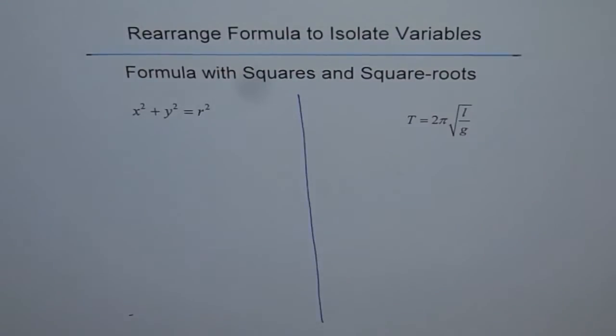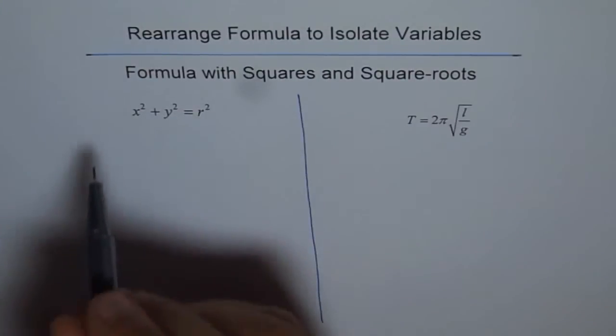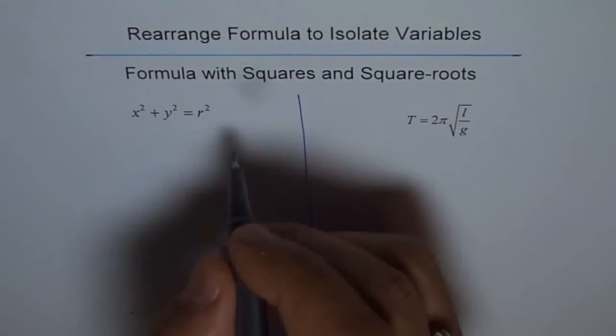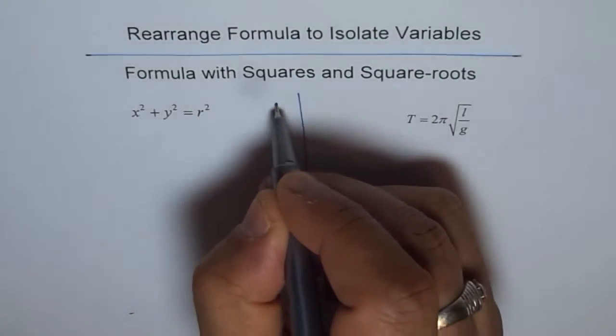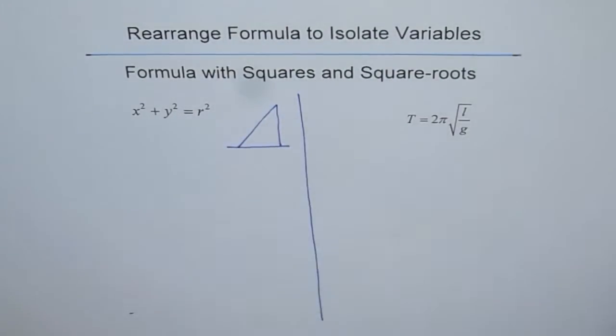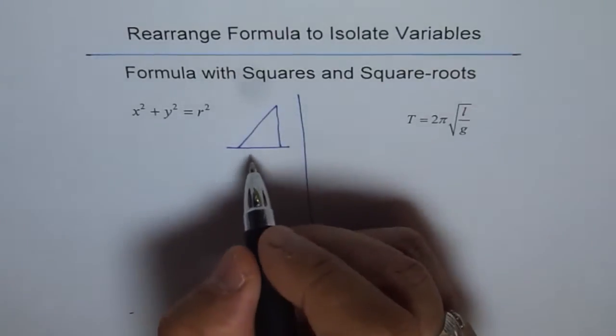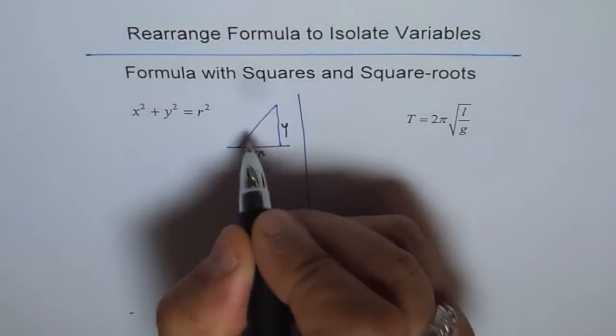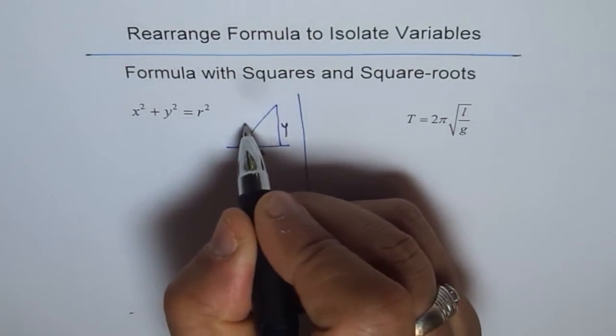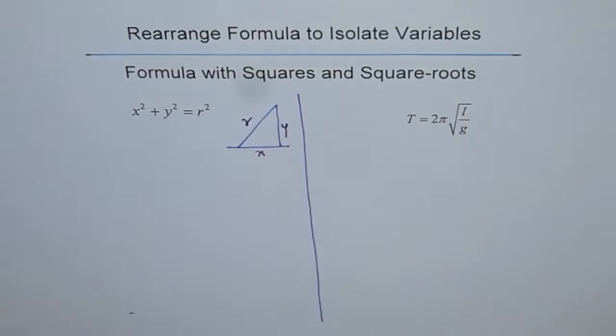These have huge applications. x² + y² = r² is the Pythagorean theorem. If the sides are x and y, then the hypotenuse is r. That is how they are related.